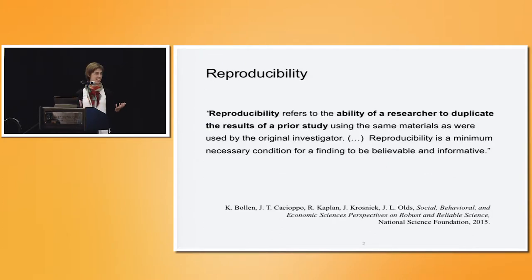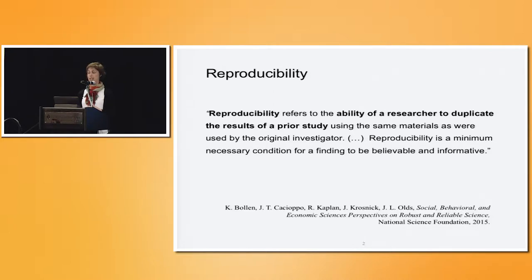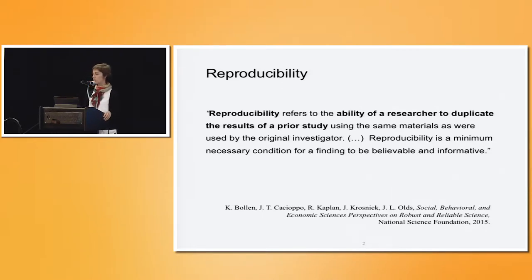As a scientist, it's always nice to start with a clear definition of what we're going to talk about. I drew this from colleagues at the National Science Foundation who in 2015 proposed the following: reproducibility is the ability of a researcher to duplicate the results of a prior study using the same materials used by the original investigator. Reproducibility is a minimum necessary condition for a finding to be believable and informative. This discussion is really going on across research disciplines, not only within computer science or machine learning.